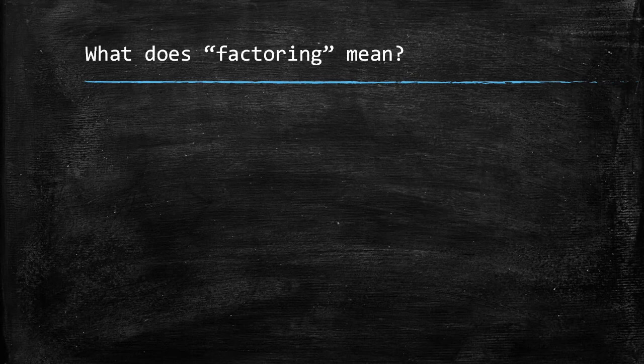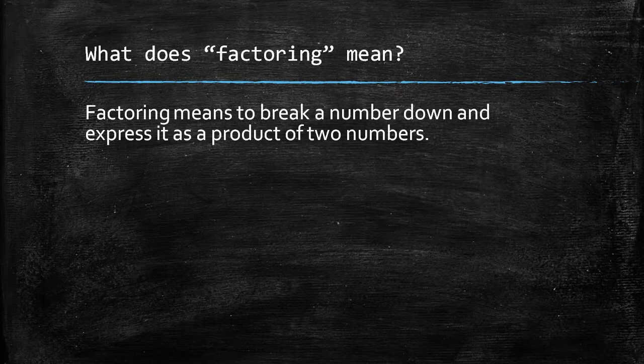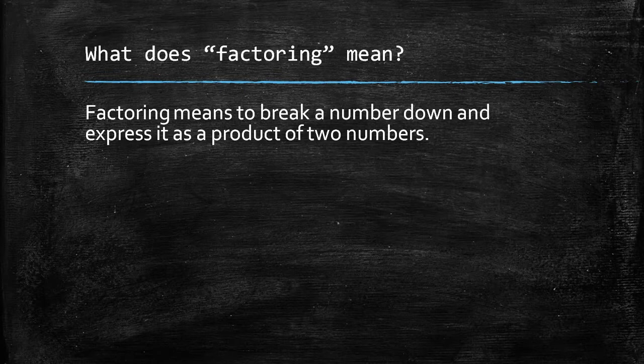What does factoring mean? Factoring means to break a number down and express it as a product of two numbers. For example, 12 can be broken down into 3 times 4.